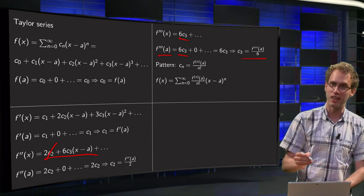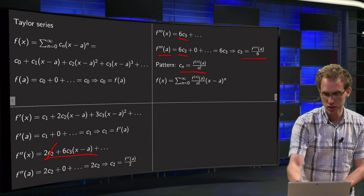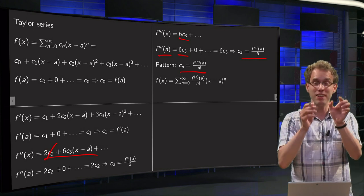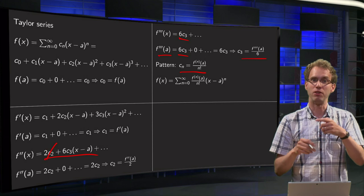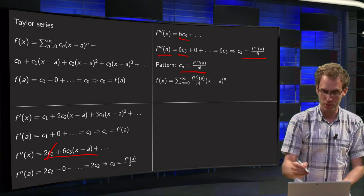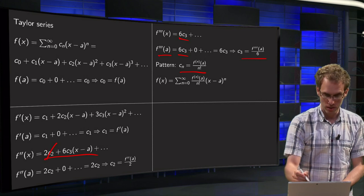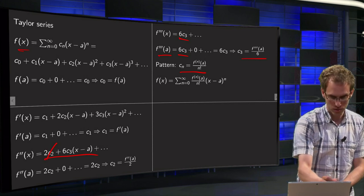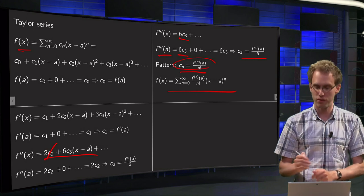And now you recognize the pattern. cn will give you the n-th derivative of f evaluated at a, and those pre-factors are coming from this repeated differentiation and give you n factorial. So you can plug this into your f(x), you can plug in this cn to get your series over here.